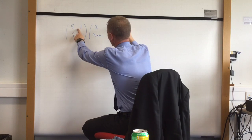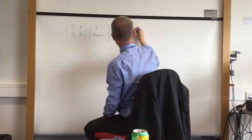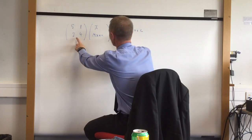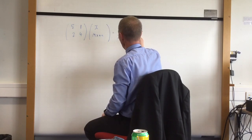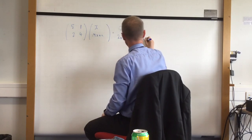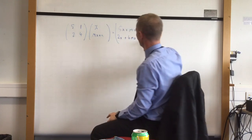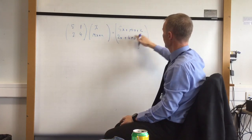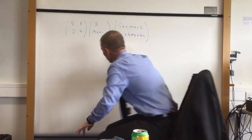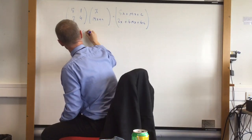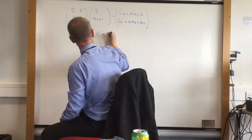So multiplying the top I get 5x plus mx plus c and the bottom I get 2x plus 4mx plus 4c. So that's my y bit and that's my x bit, so I'm going to substitute that into y equals mx plus c.